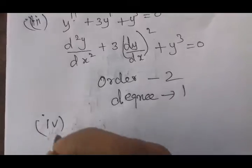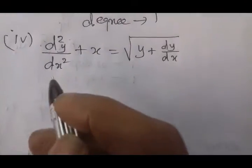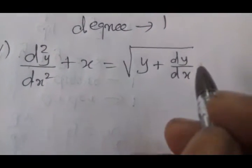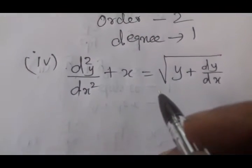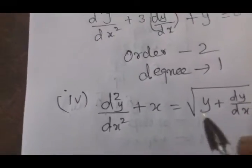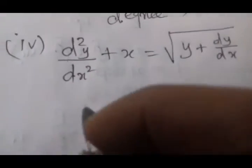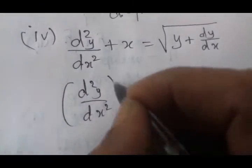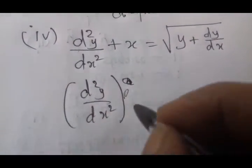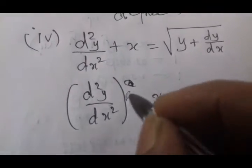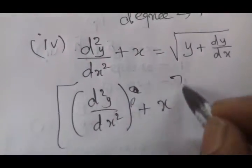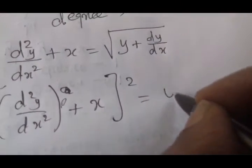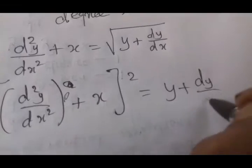At the fourth problem: d²y/dx² + x = √(y + dy/dx). Upon the root value, we will square both sides. d²y/dx² squared, the whole square, plus x whole square equals the right side. The result after squaring: y plus dy/dx.